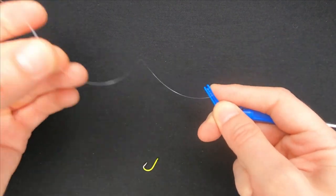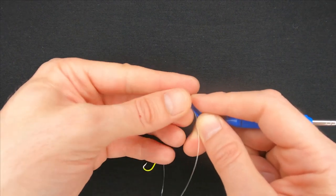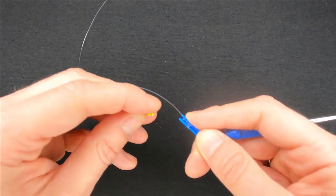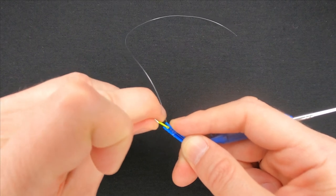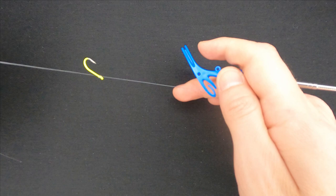The tag end goes through the middle of the wraps that you've just done from the back to the front. Put the hook between the wraps and simply pull the tag end so that it would slip from the tool onto the hook.